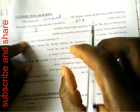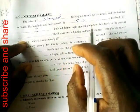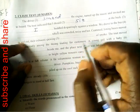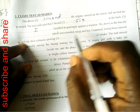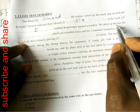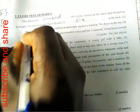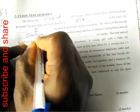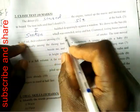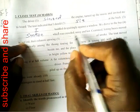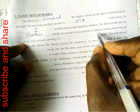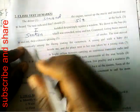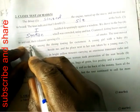Because the context — you should be aware of that context. So, it is: we drove to the bus station, which was crowded, noisy, and hot. Crammed listing buses moved in and out. Their exhaust spewing dust of smoke.